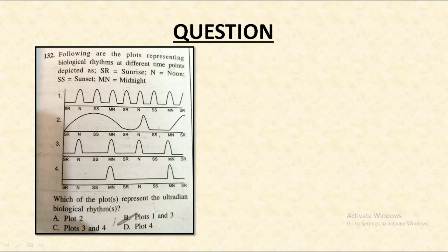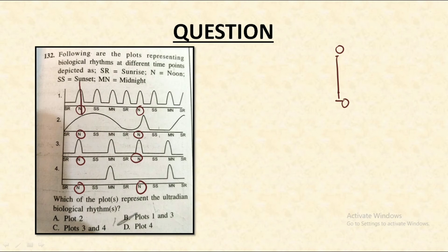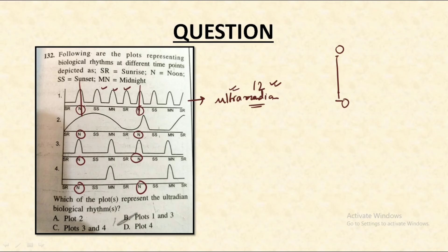Let us analyze all four plots, taking noon as our basal mark. In the first plot, we can see that between two noons — that is, within 12 hours — the cycle is getting repeated many times. So it must be an example of ultradian rhythms, because ultradian rhythms get completed in less than 24 hours. Hence, plot one represents ultradian rhythms.